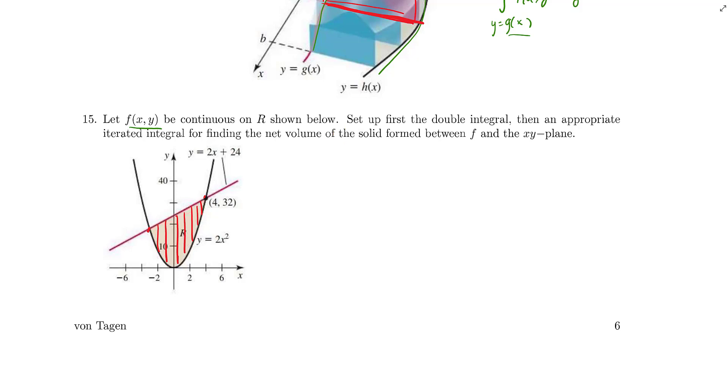So setting up first the double integral, which really isn't any new work. This is the double integral over the region R of f of x, y. That's the double integral. I just want us to keep practicing thinking of this as a double integral problem. But then we can go ahead and evaluate this as the iterated integral between, well, between which x values. This is going to go from x equals something to x equals 4. We actually need to find this coordinate right here. So let's go find that. That happens where the curve y equals 2x plus 24, I know that's a line but let's call it a curve, intersects the curve y equals 2x squared.